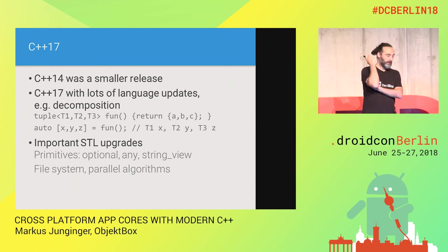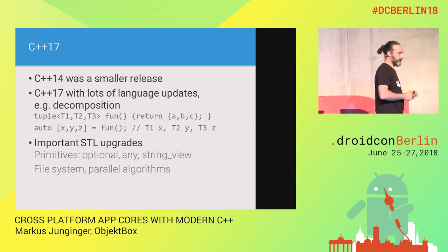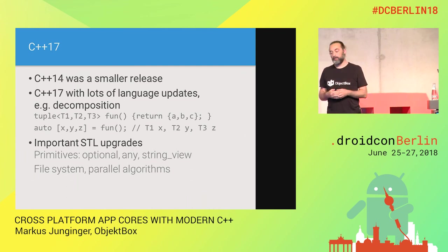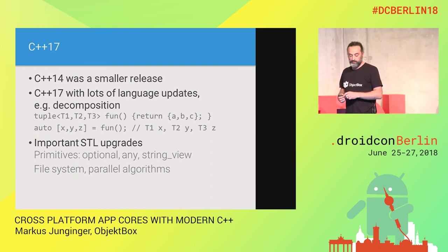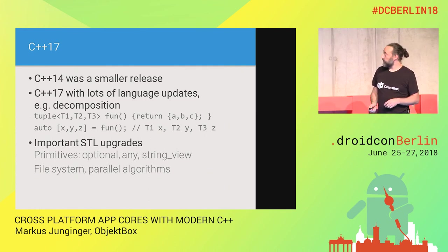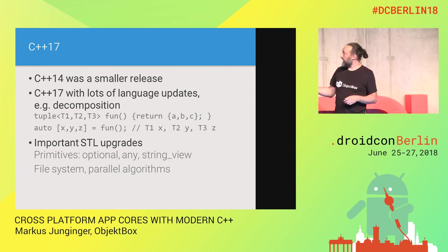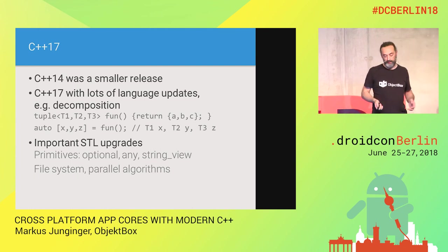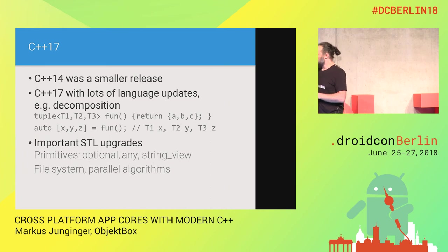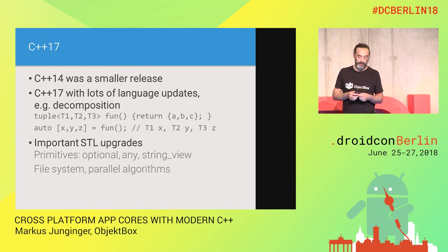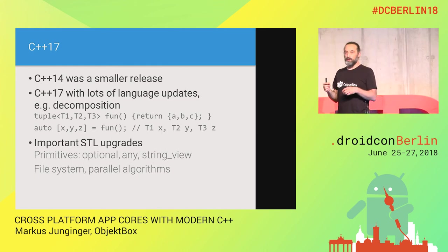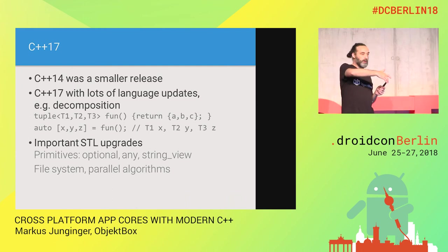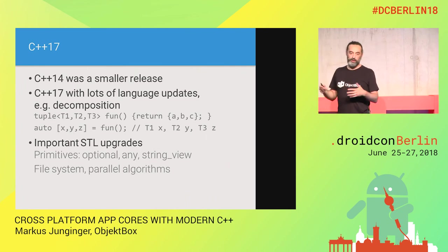We talked about C++11. Meanwhile there's C++14, a smaller release, and C++17 which is pretty important again. C++17 has cool features you might recognize from Kotlin — like structured bindings (decomposition), where you end up with three variables of different types in one line, writing a lot less code. The Standard Template Library got important upgrades too: optional, any, and string_view. And surprisingly, it took until C++17 to have a cross-platform filesystem library — before that, even reading files in a directory required platform-dependent code.